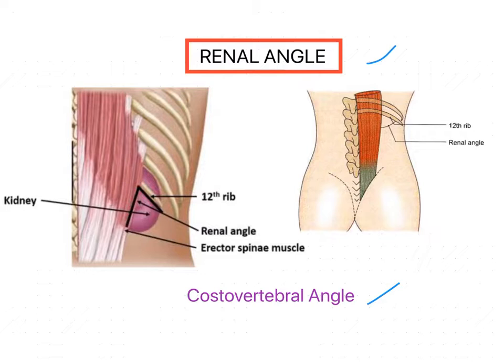This angle is present between the lower border of the 12th rib and the lateral border of the erector spinae muscles. This angle lies on top of the lower parts of the kidney — the lower poles of the kidneys. Within this renal angle there is also a small amount of pleura which extends into the renal angle.